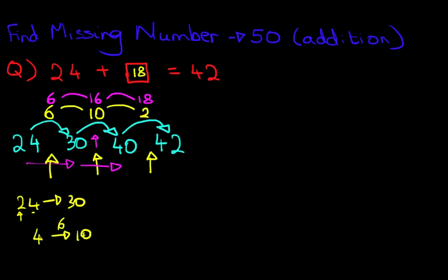So 6 plus 10 is 16. And then we went from 40 to 42, where we added two more. So we got 18. It looks very complicated, but it is actually very, very simple.